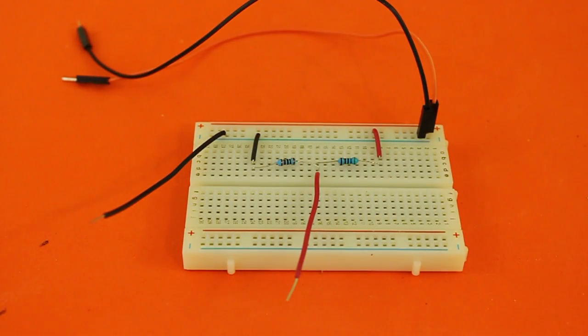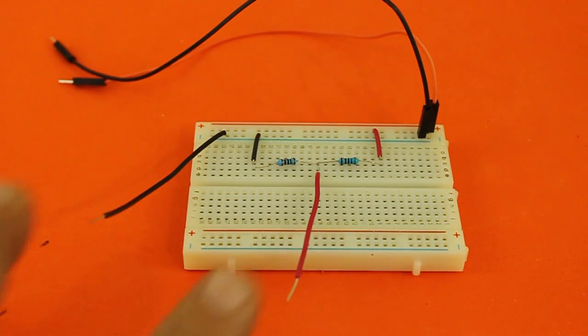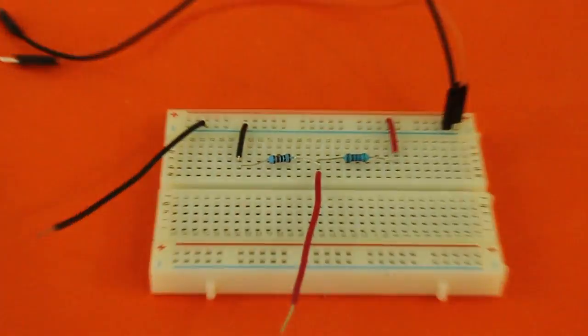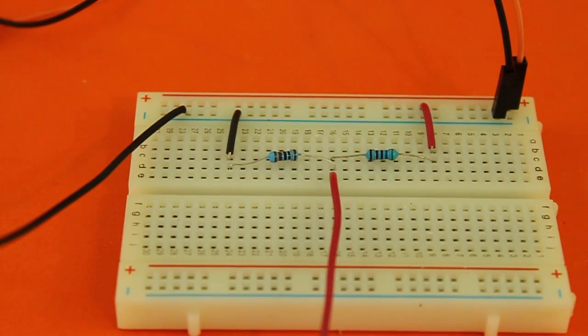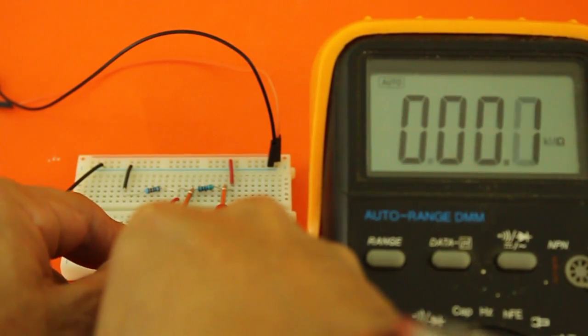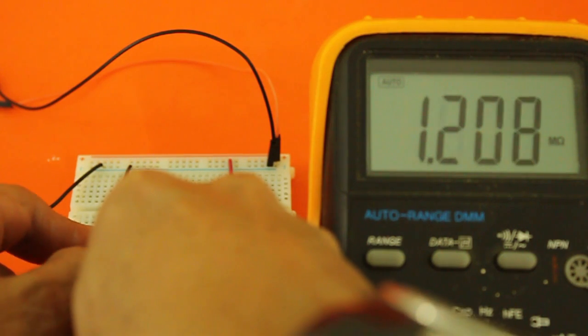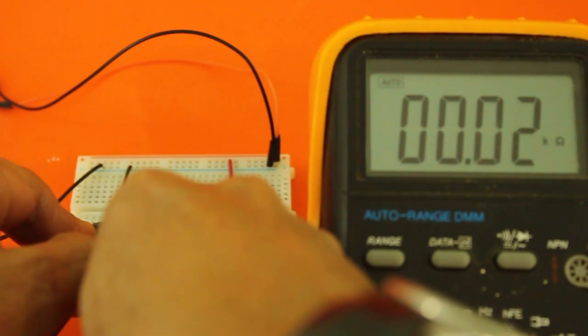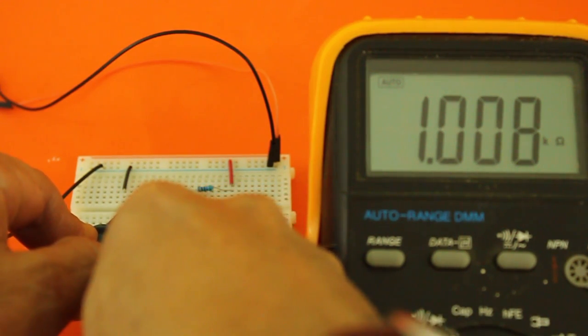Here's our voltage divider on breadboard. This is the input voltage and here we will have the output voltage and this is resistor 1 and resistor 2. Now let's measure the resistance values. R1 is 5.54 kilo ohms and R2 is 1.008 kilo ohms.